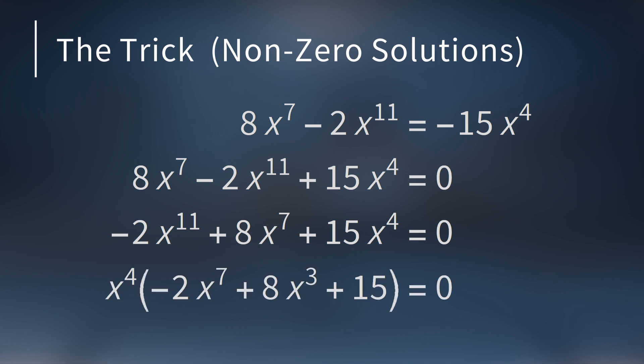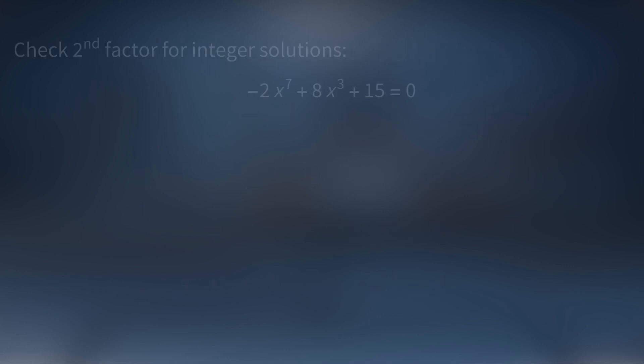Next, factor out the largest power of x. For this equation, that's x to the fourth. So we know that x equals zero is an integer solution. But now we have to check the second factor for any integer solutions.